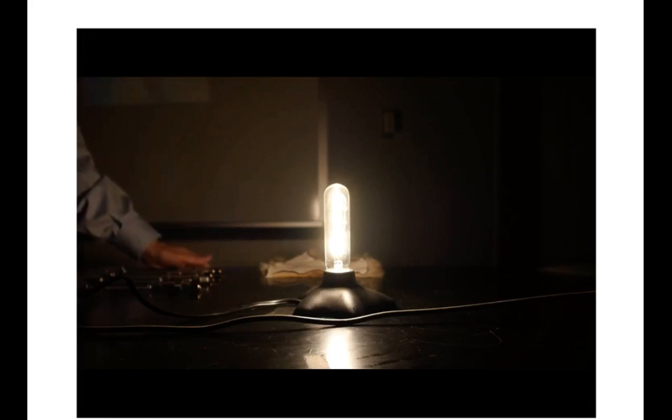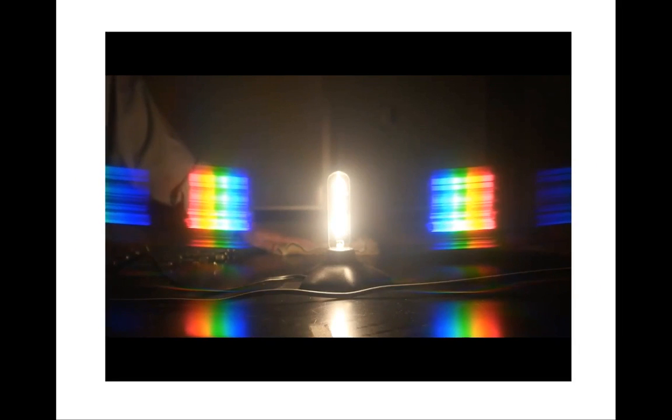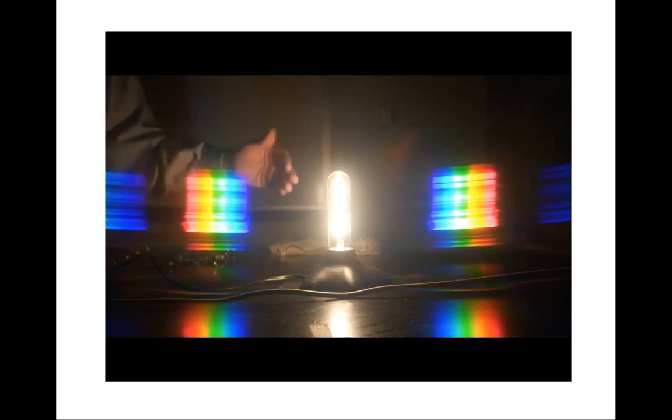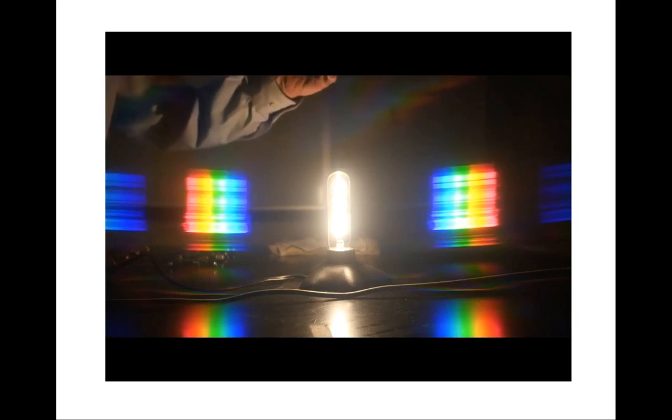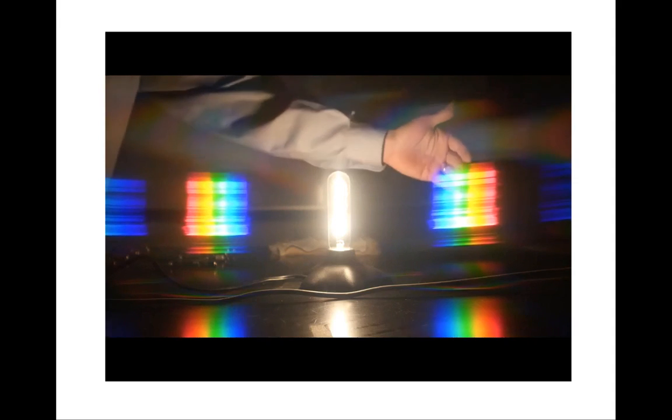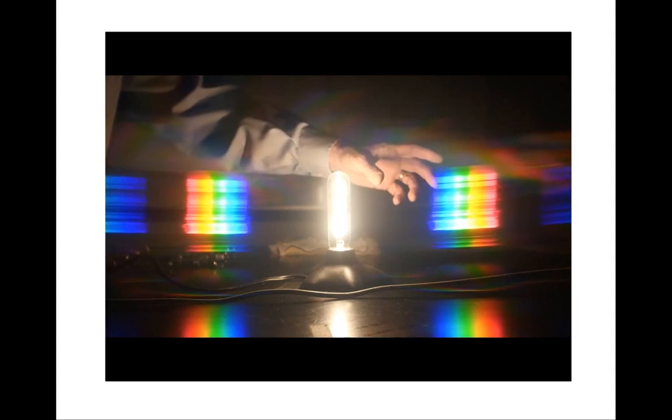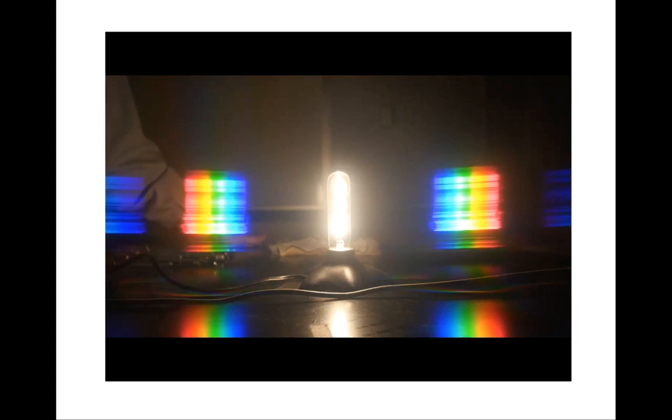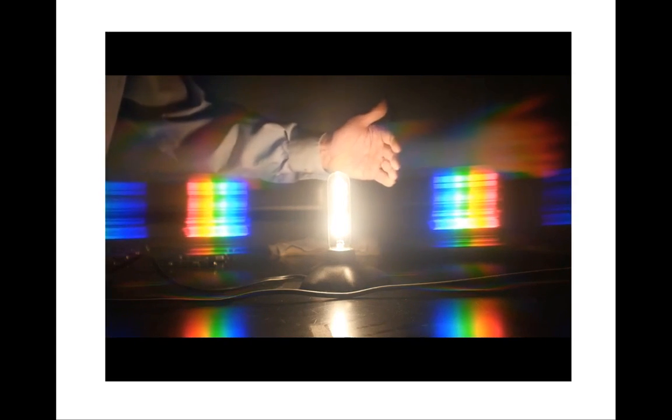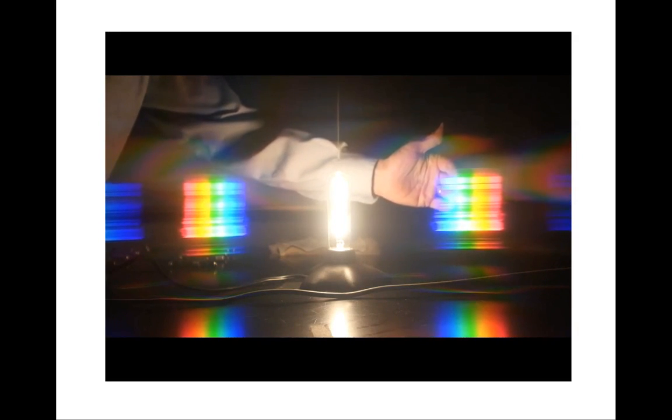I'll place this diffraction grading in front of a camera and show you the view of this continuous source with a diffraction grading in place. You'll see the image of the incandescent bulb itself and then to the right and to the left you'll see a rainbow spectrum that shows what wavelengths are present, violet through all the colors of the spectrum all the way through red.